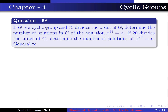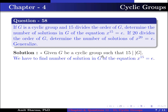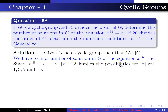Question number 58. If G is a cyclic group and 15 divides the order of G, determine the number of solutions in G of the equation x¹⁵ = identity. If 20 divides the order of G, determine the number of solutions of x²⁰ = identity. Given G is a cyclic group such that 15 divides the order of G, since x¹⁵ = identity implies the order of x divides 15, the possibilities for the order of x are 1, 3, 5, and 15.